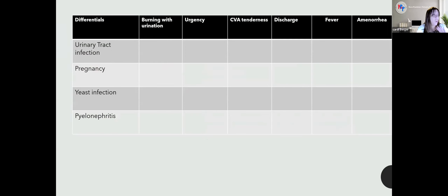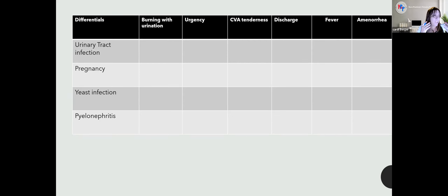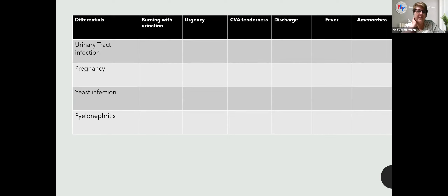Here are some possible differentials. It's important to rank our differentials because that guides testing to narrow what we're thinking about and arrive at a primary diagnosis. For UTI, we'd think about a urinalysis — dipstick UA, maybe reflex to culture. Reflex to culture is great because if it doesn't meet certain criteria it doesn't go to culture, and you can look at it and determine whether to treat with antibiotics.